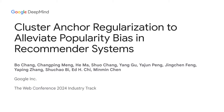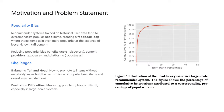Hi, it's my great pleasure to present our work on cluster anchor regularization, a technique to alleviate popularity bias. Modern recommender systems are trained on historical user data, and they tend to overemphasize popular or head items. This creates a feedback loop where popular items become even more popular. Reducing this popularity bias will benefit all participants in the ecosystem.